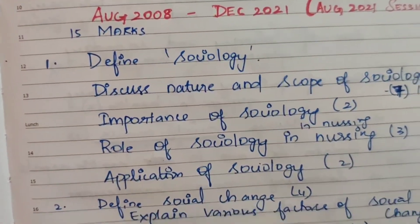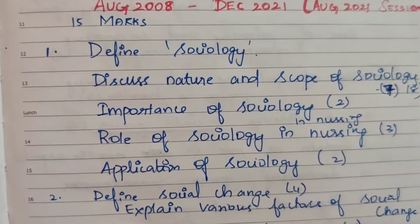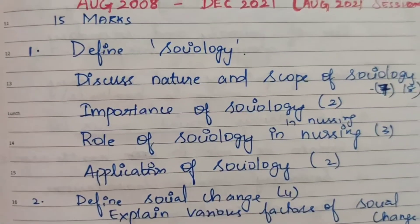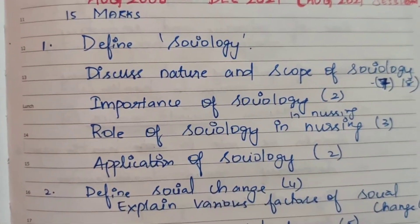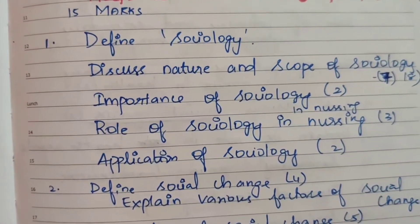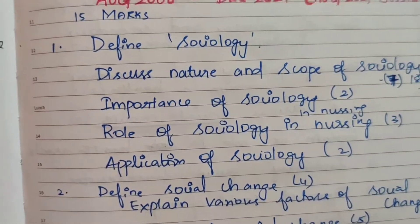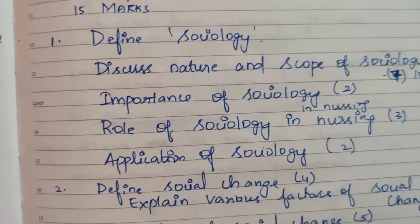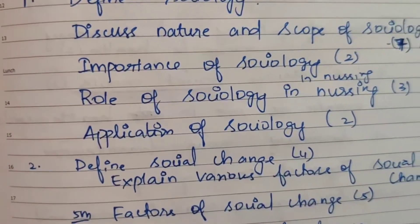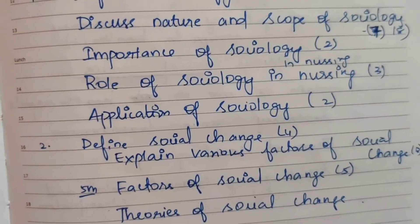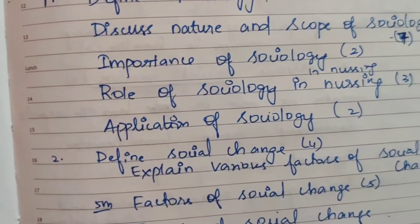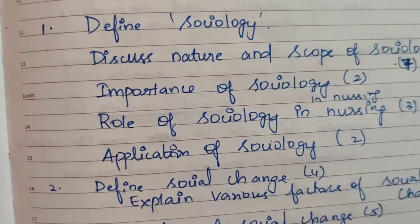The first question is sociology: Define sociology, discuss the nature and scope of sociology. This question has appeared 8 times — for 15 marks and 5 marks. Nature of sociology and scope of sociology are the key topics. Next, importance of sociology in nursing — two times. Role of sociology in nursing is a similar question, asked three times.